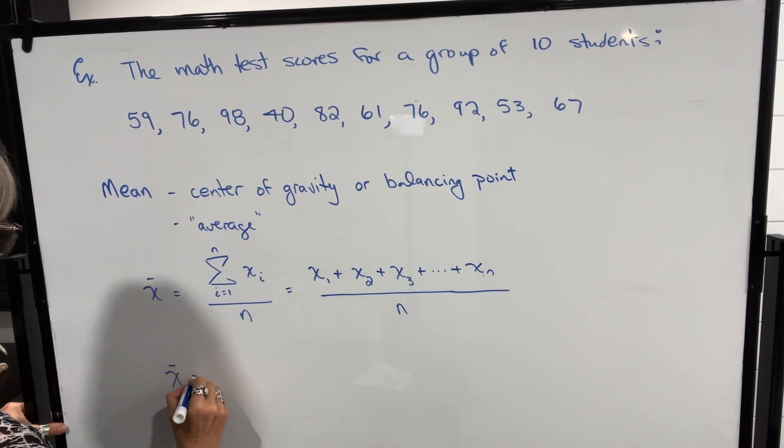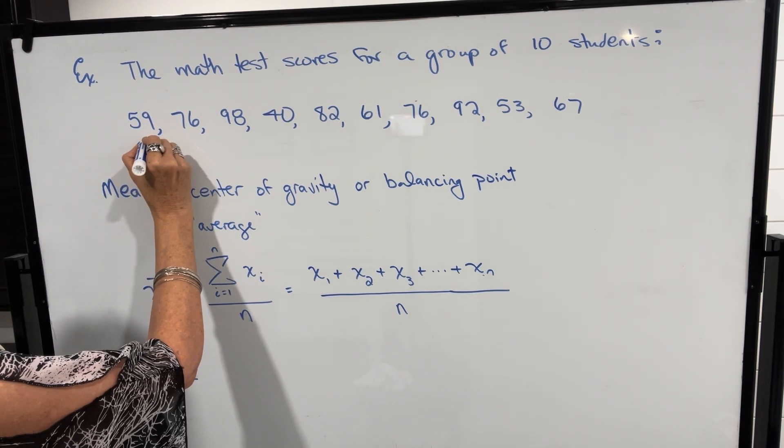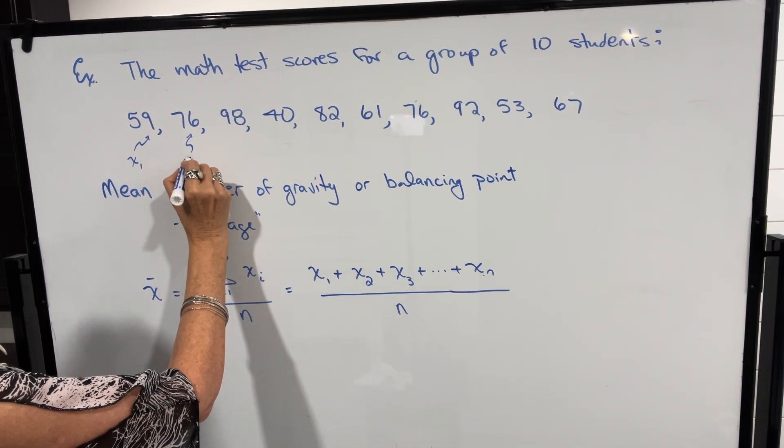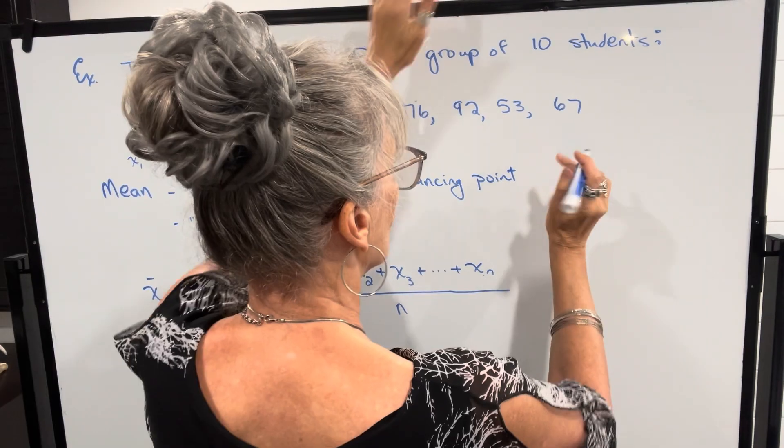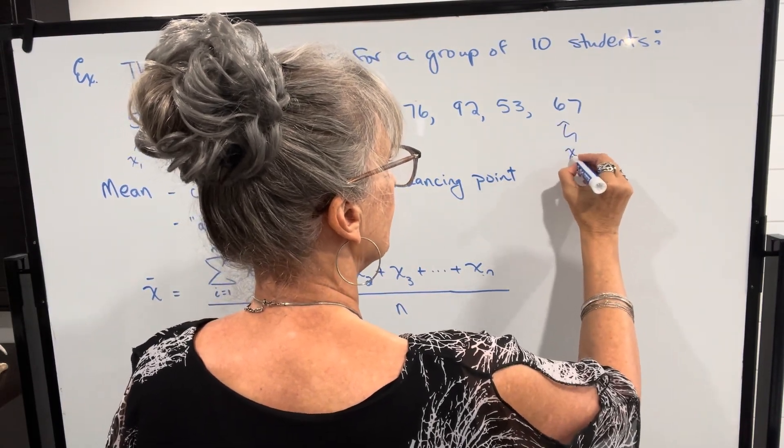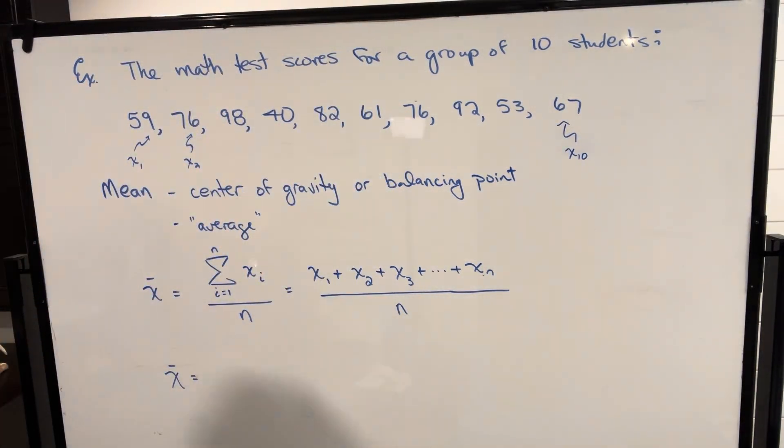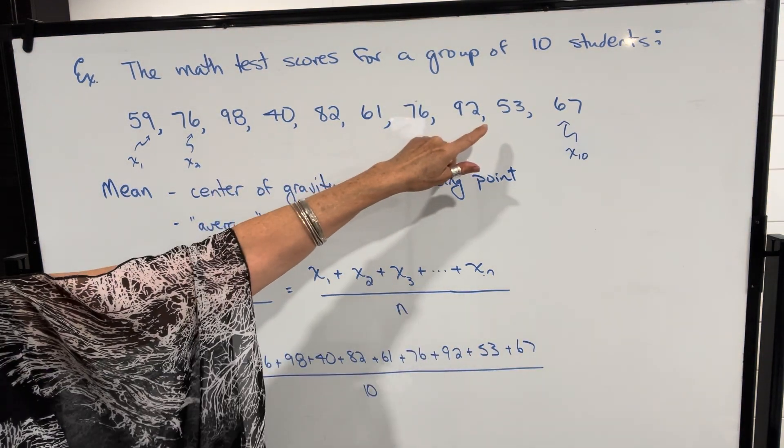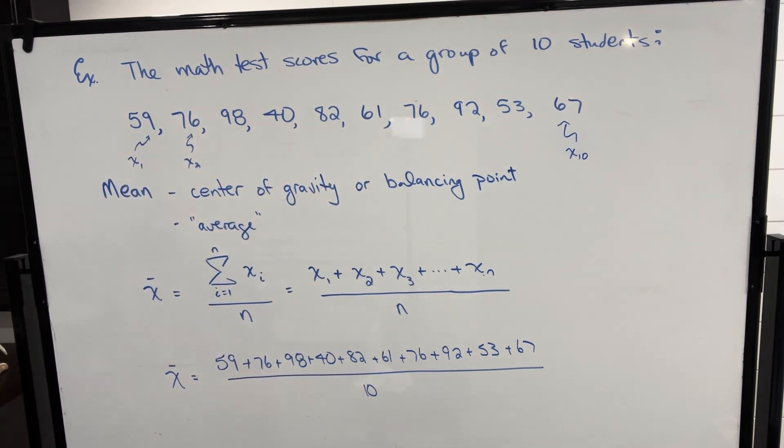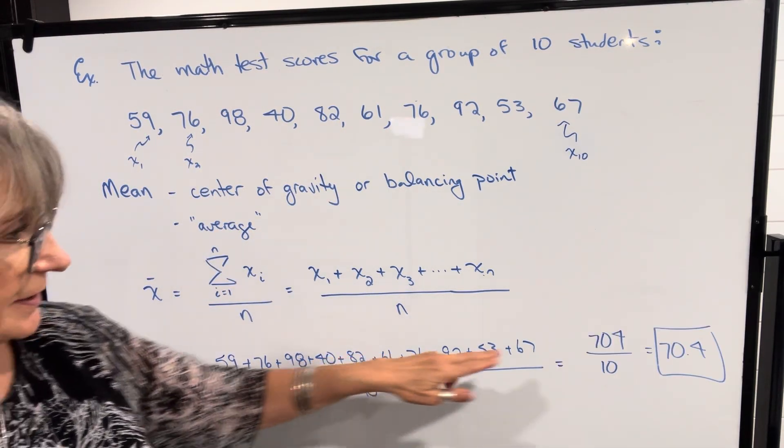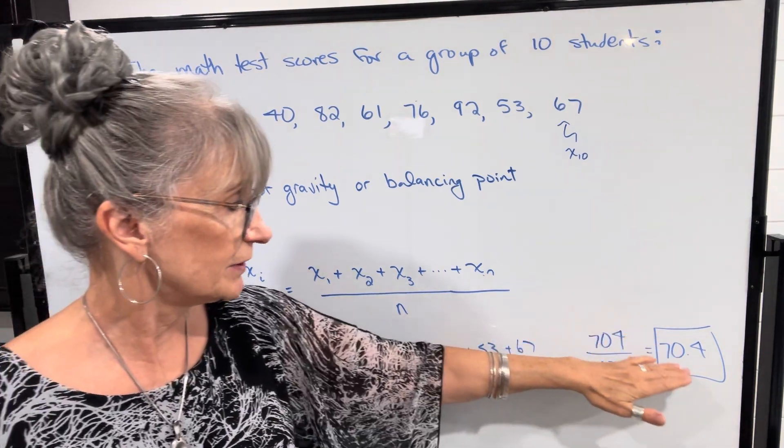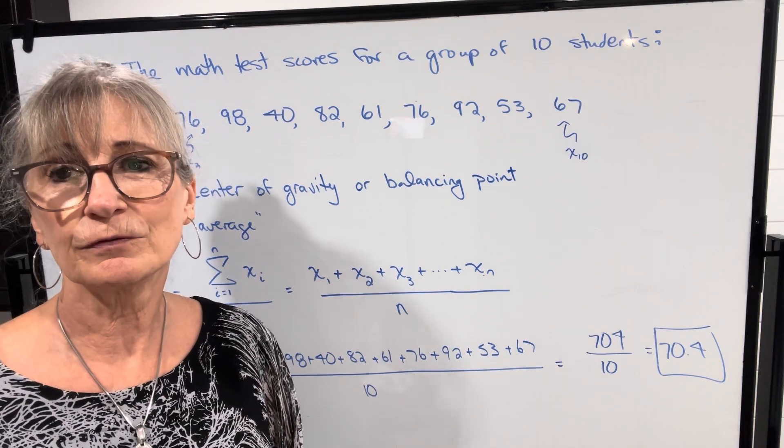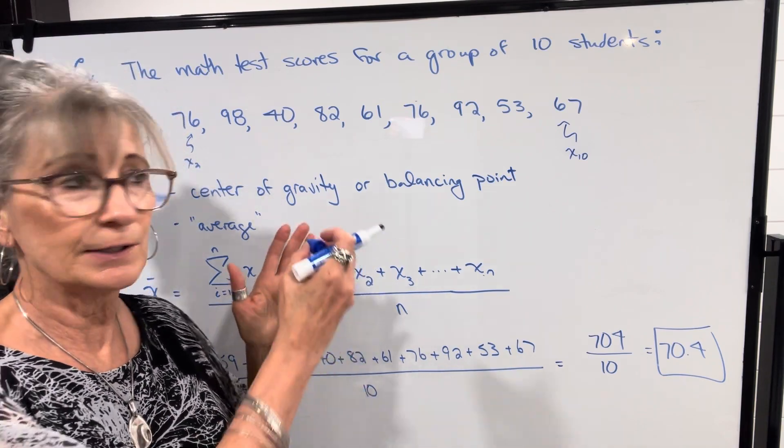Let's take a look at how that looks with this example. We're calculating the mean. Remember, each of these values represents an x value. This value would be x10. So we simply add everything up. Our numerator will be the sum of all those scores, and we know because we have 10 scores, n equals 10. When we calculate the sum we get 704, and when we divide we get a mean of 70.4. So that's going to be the most useful measure of central tendency for our data.